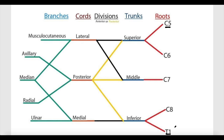The first part of the brachial plexus is called the roots of the brachial plexus. The roots of the brachial plexus equal the spinal nerves that participate in forming it. We have already said that the spinal nerves participating in the brachial plexus are from C5 to T1. So the roots, which is the very first part of the brachial plexus, are the spinal nerves from C5 to T1.